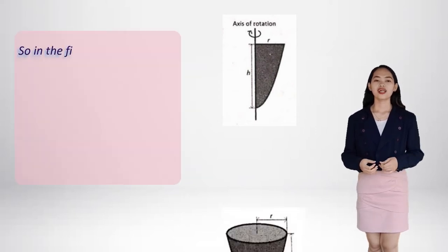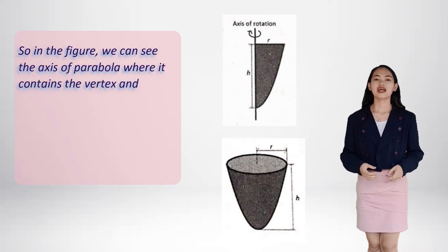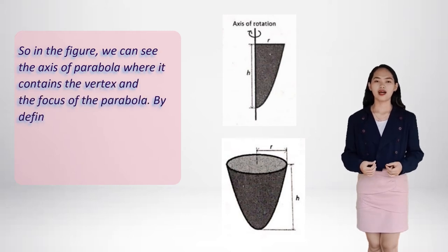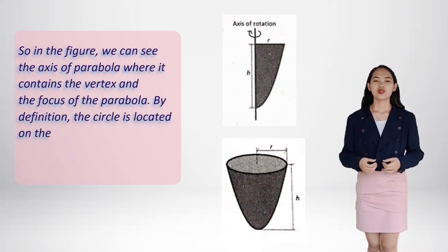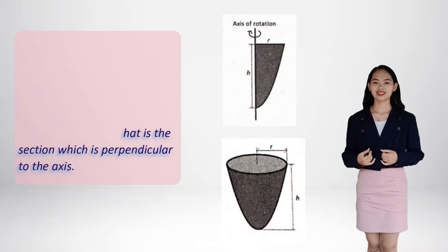So in the figure, we can see the axis of parabola where it contains the vertex and the focus of the parabola. By definition, the circle here is located on the top because that is the section which is perpendicular to the axis.